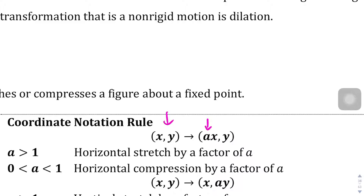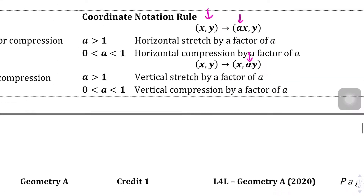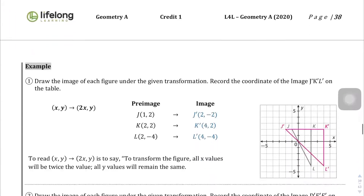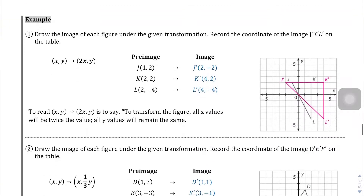So you'll be multiplying the x and the y by a non-1 (or non-negative-1) valued number. Let's take a look at some of these examples here.